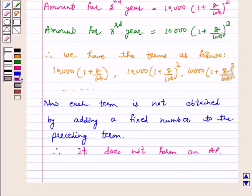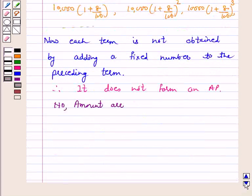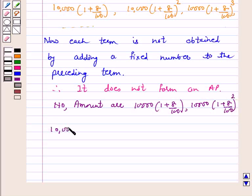Hence, the answer for the above situation is no. The above situation does not form an AP and amounts are: 10,000(1 + 8/100), 10,000(1 + 8/100)^2, 10,000(1 + 8/100)^3 and so on.